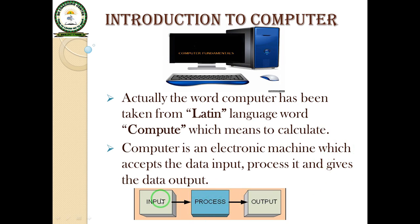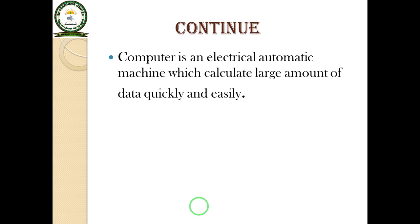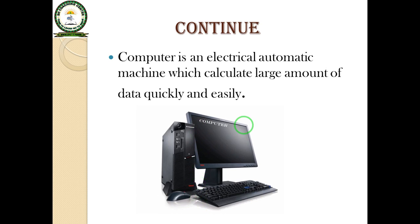First of all, the computer takes the instructions from the user — that means input data — and processes it. After the processing, it shows the result or gives the data output. Computer is an electrical automatic machine which calculates large amounts of data quickly and easily, reading all the data which helps it in running and performing functions easily.